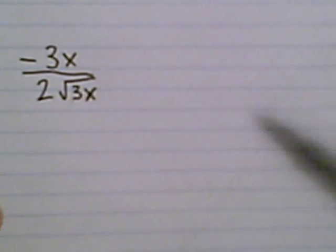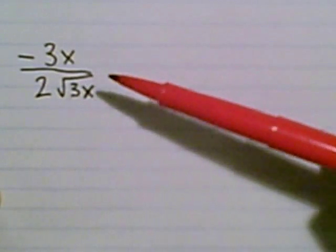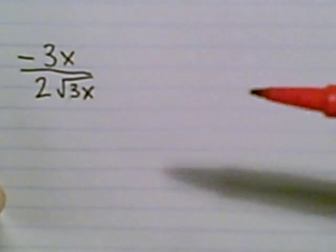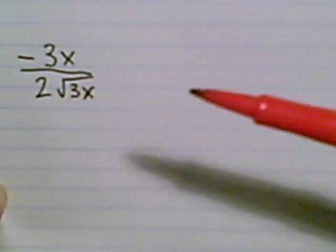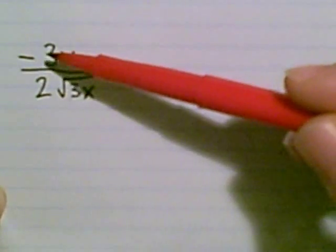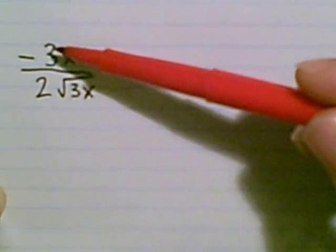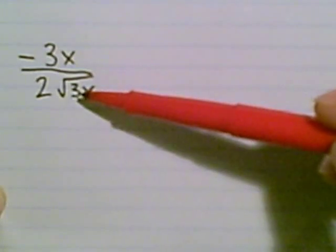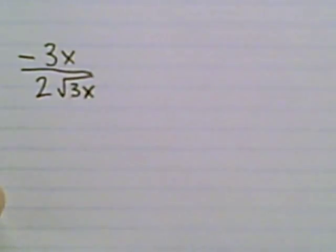One more example: negative 3x over 2 times radical 3x. Can I simplify the fraction? Well, no, not yet. There's 3 in the numerator and 3 in the denominator. However, the 3 is in a radical, that 3 is not, those cannot be canceled.